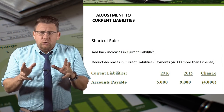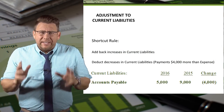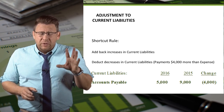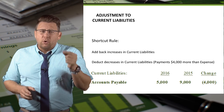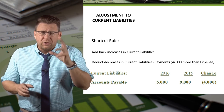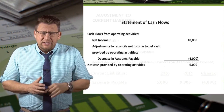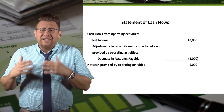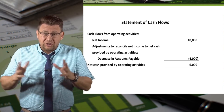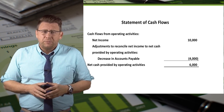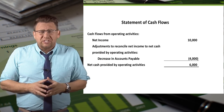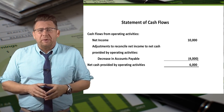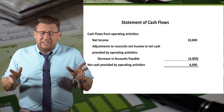So back to our shortcut rule: we deduct decreases in current liabilities because in this example, cash payments are $4,000 more than rent expense. Since rent expense was used to arrive at net income, we need to deduct an additional $4,000 from net income. Assuming net income is $10,000, the cash provided by operating activities is $6,000.